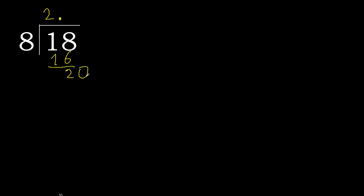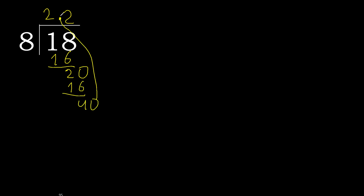Now we have 20. 8 multiplied by 3 is greater, so multiplied by 2 gives 16. Subtract. Complete — place the decimal point here.